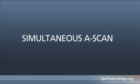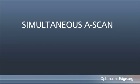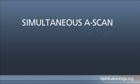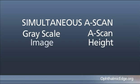You could also do a simultaneous A-scan, and if you're perfectly perpendicular with a vector line, you would then be able to establish what is the A-scan height as well as the grayscale image at the same time. I use both grayscale and A-scan simultaneously so that I know where my A-scan is coming from and whether or not I am truly perpendicular.